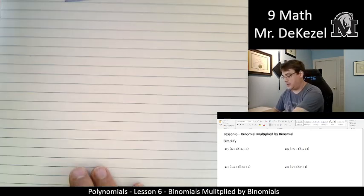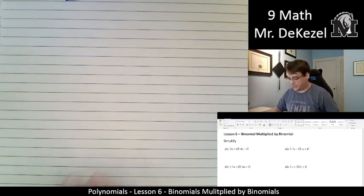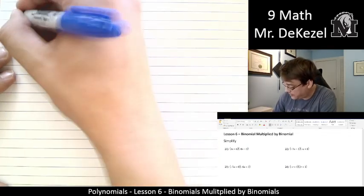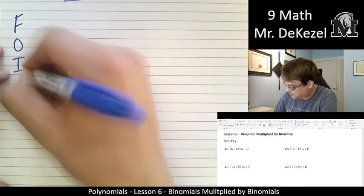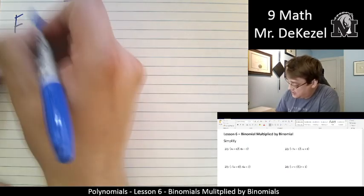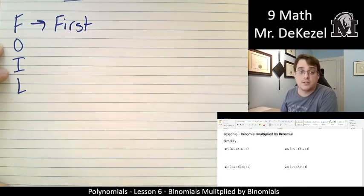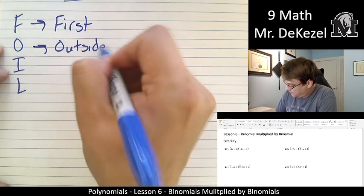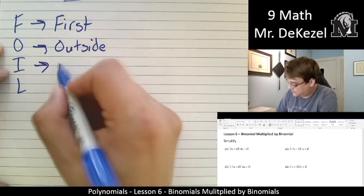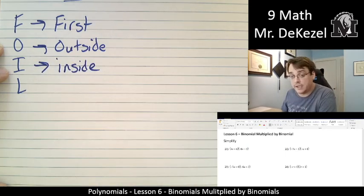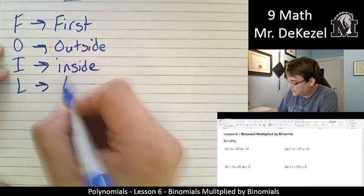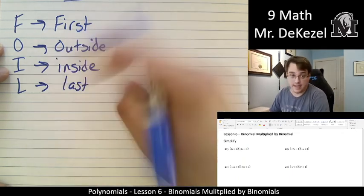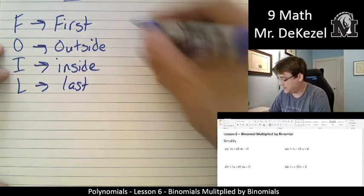Let's write out a little acronym first that I know helps me. We're going to follow this method. It's called the FOIL method. And what FOIL stands for is the first terms, the outside terms, the inside terms, and the last terms. So let's do an example, and we can use it. Let's go.